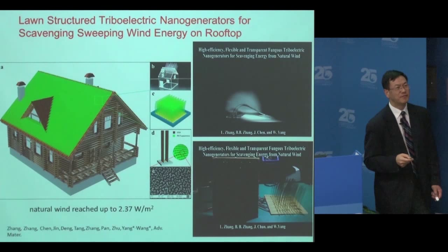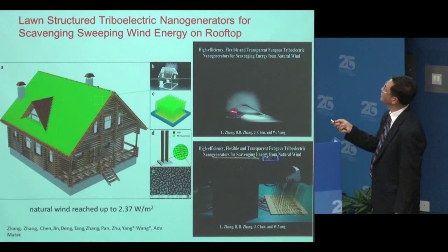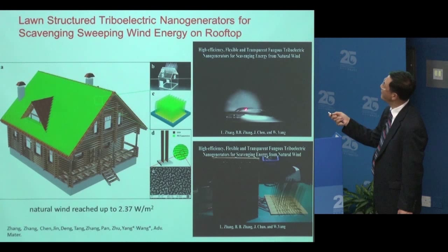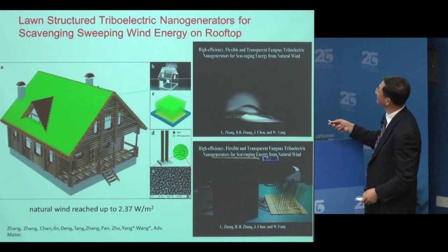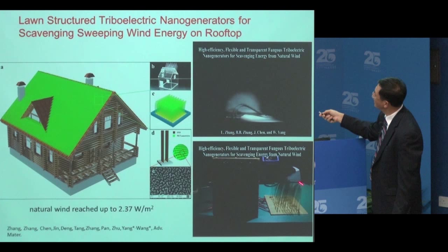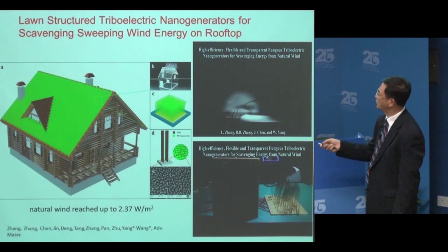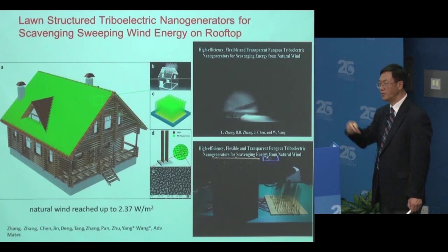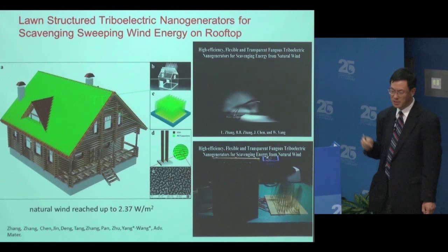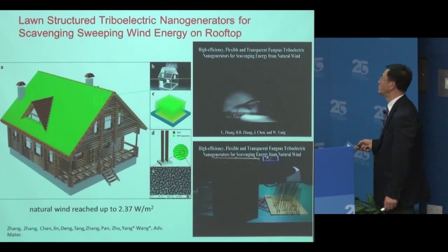Wind energy: instead of conventional wind mills, we have two pieces of polymer — on the wind they dance and contact each other. On the wind-driven contact, look at the light: it has energy. You can put this on a roof. So far we can get more than two watts per square meter surface area. For remote areas, you can do self-sustaining micro grid. This is a new way to convert wind energy to electricity — besides solar cells, we can do this as well.